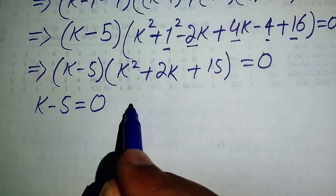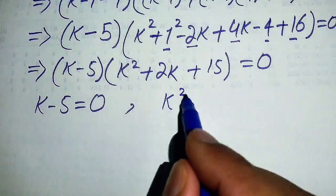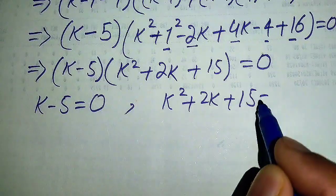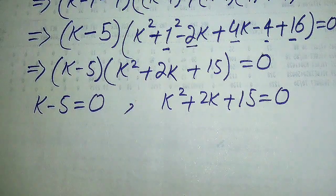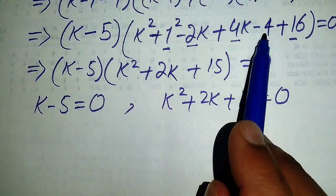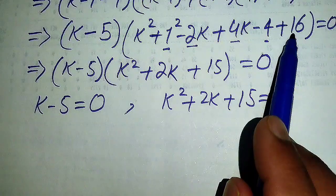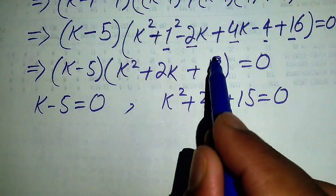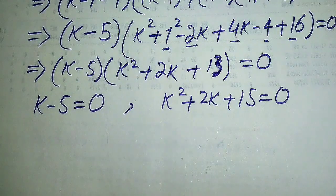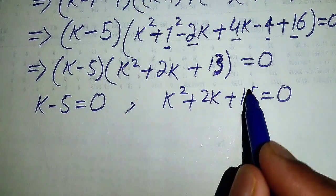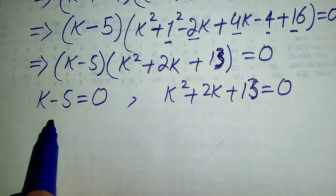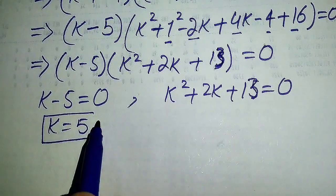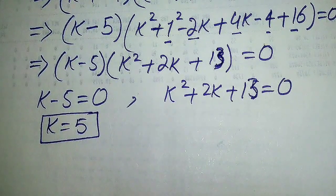We divide into two cases: first, k - 5 = 0, giving k = 5. Second, k² + 2k + 13 = 0. So we get k = 5 as one real root. Now we check whether the quadratic equation has real roots.